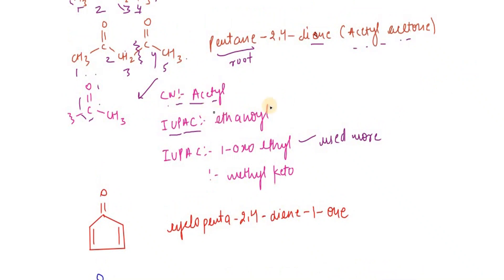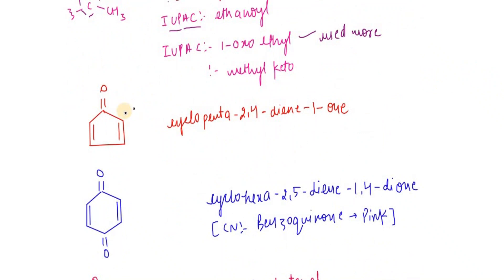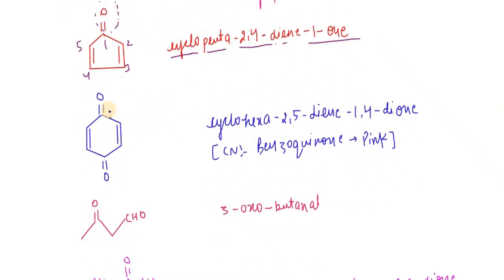In the cyclic chain, this is the only functional group. Numbering one through five, it is cyclopenta-2,4-diene-1-one. Cyclo is the primary prefix, this is the root, and this is the primary and secondary suffix.